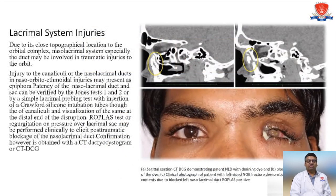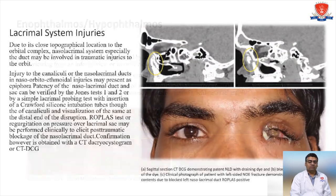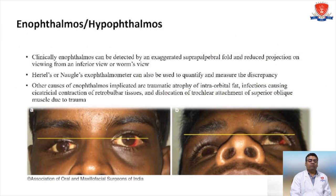Lacrimal system injuries: a blocked nasolacrimal duct results in no drainage of the eye. To evaluate this, we perform a dacryocystogram to assess the bone, followed by dacryocystorhinostomy (DCR). Enophthalmos or anophthalmos: clinically, enophthalmos can be detected by a deepened supratarsal fold and reduced projection of the globe from the frontal view.